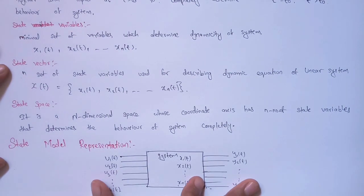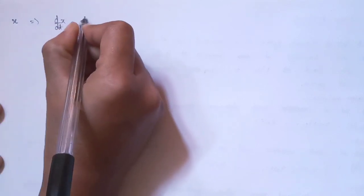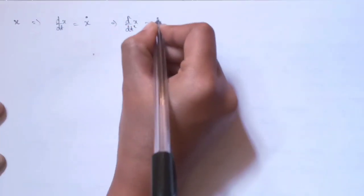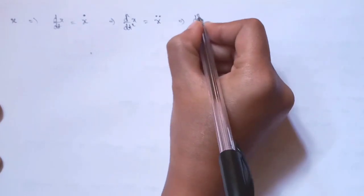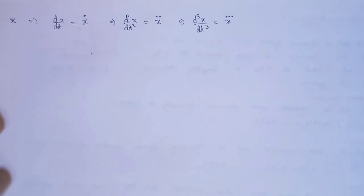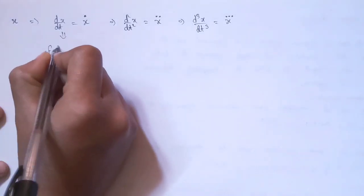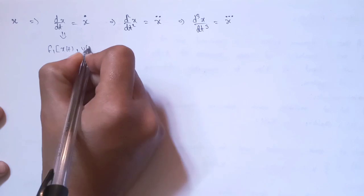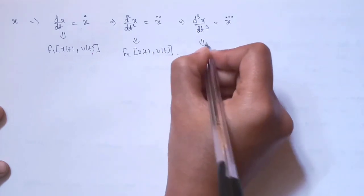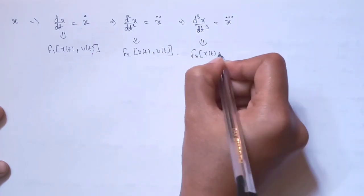In state model representation, when a state variable x is differentiated with respect to t, we write it as x-dot. When differentiated twice, we put a double dot, and if differentiated three times, it gets three dots. So we have a first function of x(t) and u(t), a second function of x(t) and u(t), and a third function — representing first-order, second-order, and third-order differential equations given by state space analysis.